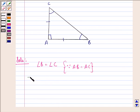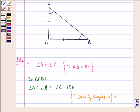Now in triangle ABC, angle A plus angle B plus angle C is equal to 180 degrees, because the sum of angles of a triangle is 180 degrees.